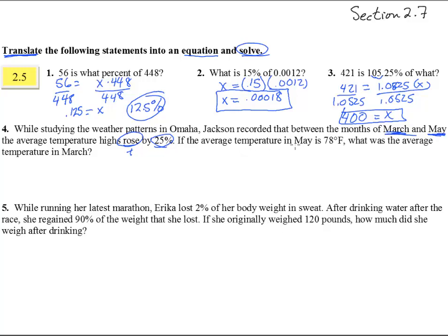If the average temperature in May, so this is the final price, I mean the final temperature, what was the average temperature in March? So the original in March, I'm going to put an M for March even though May could have been, but it's March. It rose by 25 percent of March to end up at 78 degrees.